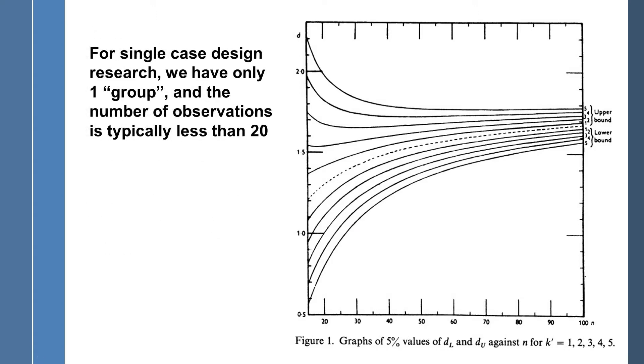So let's map it out. If we have only one group, and I put group in parentheses, or scare quotes, because I'm not really sure how we would apply the group situation in this type of research. I'm just going to assume that the group is one. And the number of observations typically is less than 20. And that would put us right about here. So our critical value is about 1.08.